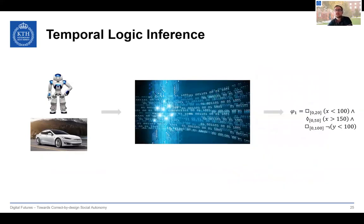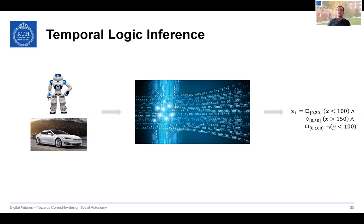Typically, system properties expressed through LTL or STL are designed based on domain or task knowledge. But whenever a formal representation of system behavior does not already exist, motion planning and safety guarantee calculations are not possible. However, today's systems generate a lot of sensor data, so we may have records of autonomous systems describing their behavior. Temporal logic inference methods aim at synthesizing behavior descriptions from system data — once such a specification is generated, it can be used for control purposes or to provide guarantees on proper system execution.